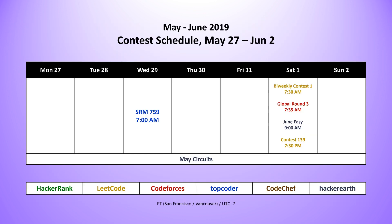Taking a look at the contests that took place last week, there were five of them. We started off with Topcoder SRM 759 on Wednesday. Then we had four contests on Saturday: the new bi-weekly LeetCode Contest number one, followed by CodeForces Global Round 3, then the June Easy Contest from HackerEarth, and we finished off Saturday with the weekly LeetCode Contest number 139. Throughout the week, we also had the May Circuits Contest from HackerEarth.